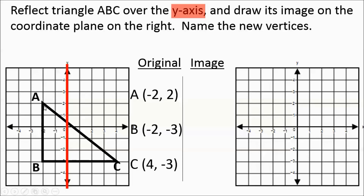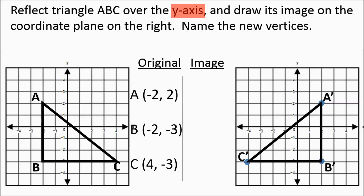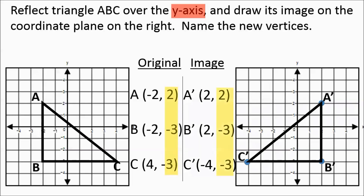Point A is currently 2 to the left of the y-axis, so its reflection is going to be 2 to the right. Point B is also 2 to the left — it's going to be 2 to the right of the y-axis. Point C was 4 to the right, so it's now going to be 4 to the left. We draw our new triangle and name our new points with apostrophes showing that's the image of the original. When reflecting over the y-axis, the y-values stay exactly the same and we just take the opposite of the x-values.